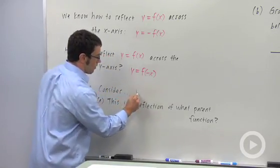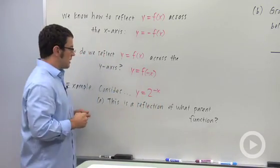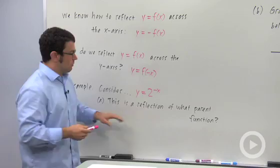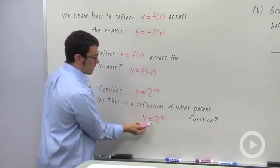So let's consider an example, y equals 2 to the negative x. This is a reflection of what parent function? Well, it's y equals 2 to the x, right? This will be a reflection of y equals 2 to the x.